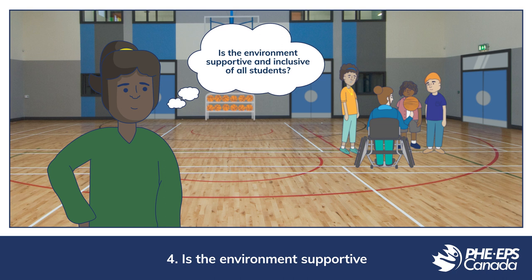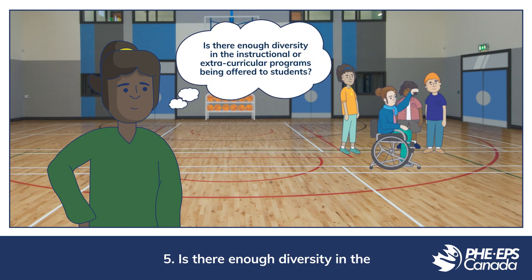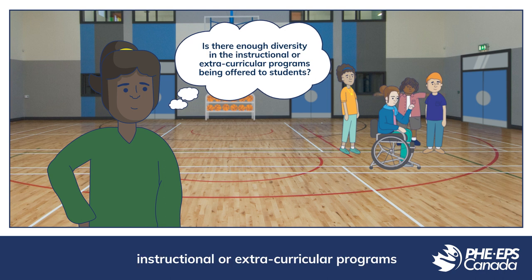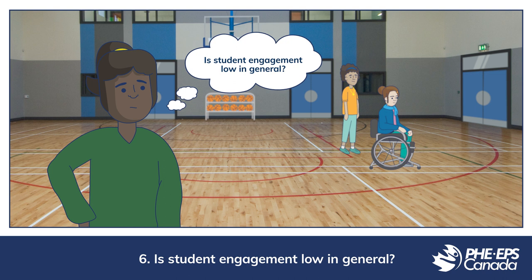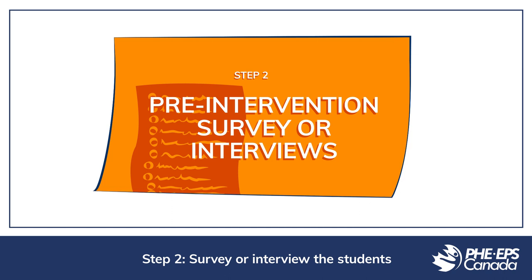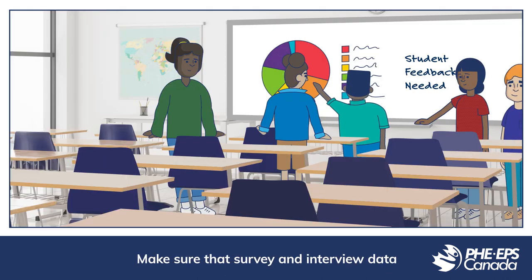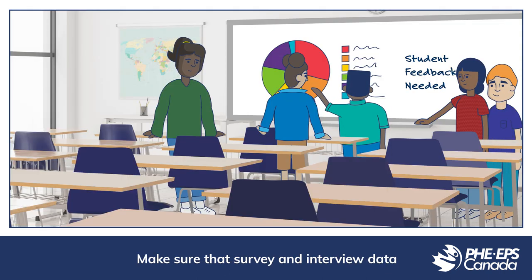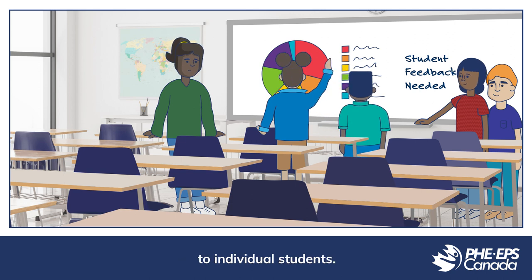Is the environment supportive and inclusive of all students? Is there enough diversity in the instructional or extracurricular programs being offered to students? Is student engagement low in general? Step 2: Survey or interview the students to learn more about them and more about the problem. Make sure that survey and interview data is anonymous and cannot be linked to individual students.